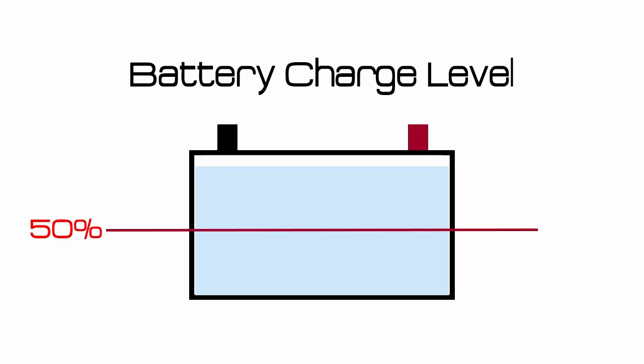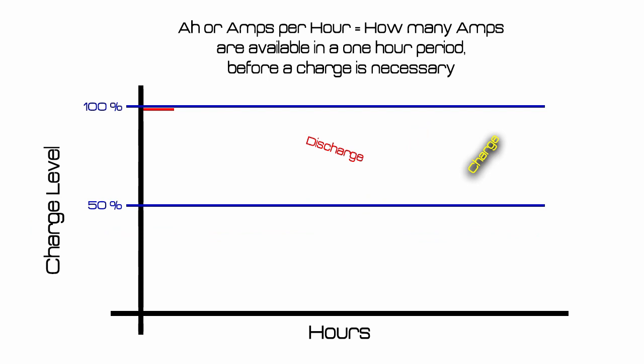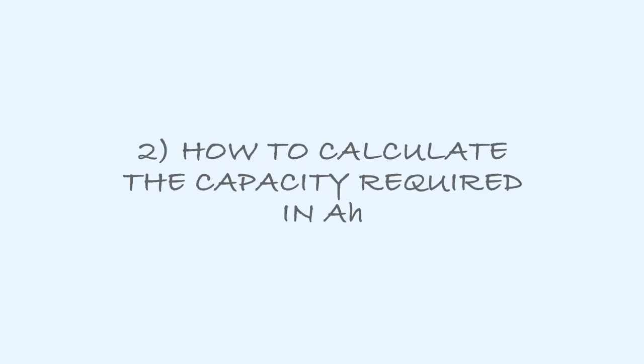Here I need to mention an important rule: a deep cycle battery should not be discharged to more than 50%. So if you buy a 100 amp-hour battery, you should only use 50 amps over an hour then recharge the battery. Or you could draw 100 amps but only for half an hour, then recharge. You can draw more for longer but the life of the battery will shorten significantly — so remember that.